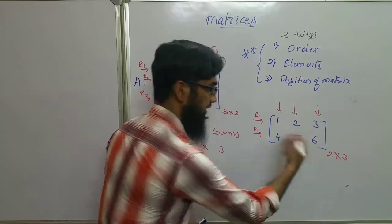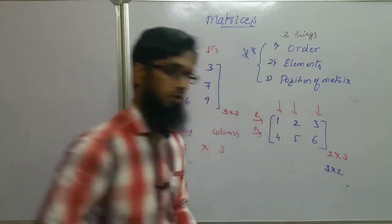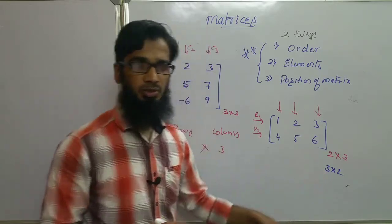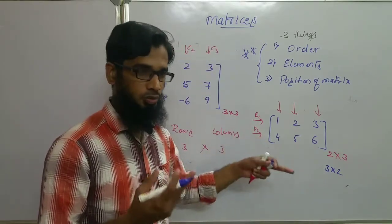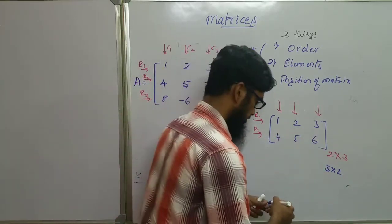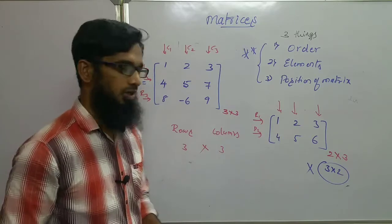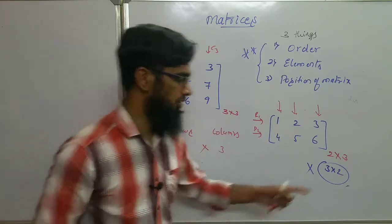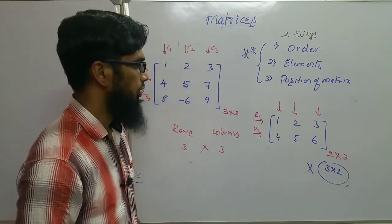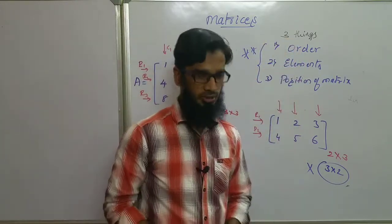If you write the order in reverse as three cross two (3×2) for a matrix that actually has two rows and three columns, that is incorrect. Always the first number represents rows and the second number represents columns when writing the order of a matrix.